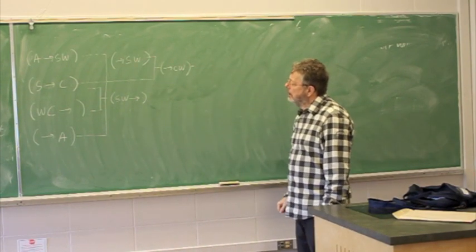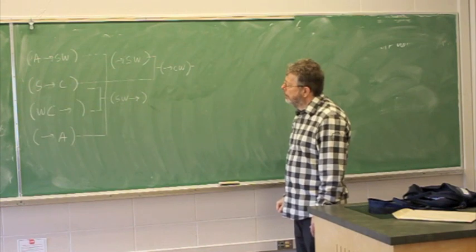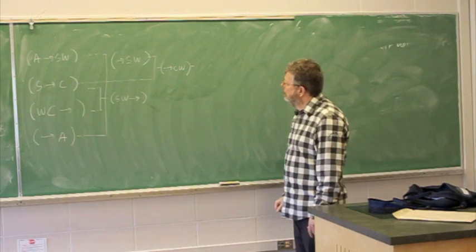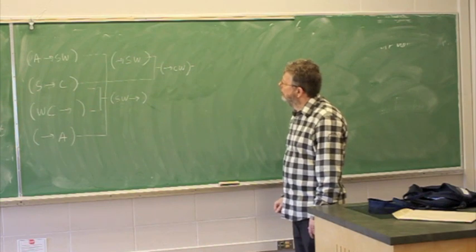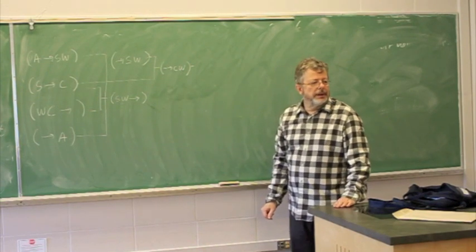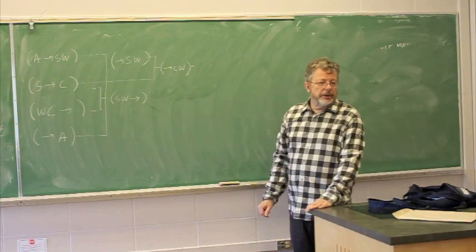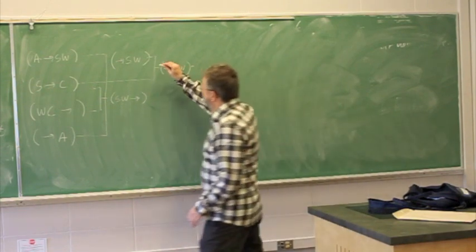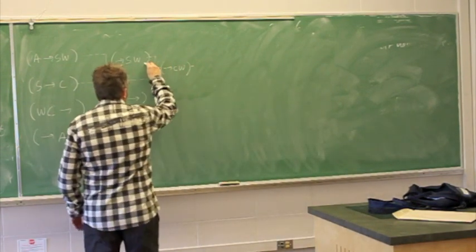What's happened now is that I don't believe we can get any new clauses. So can you take C implies SW and SW implies nothing and get S implies S and W implies W? Well, yeah, that's right. There's two. So let's combine, let's see what we can do here.